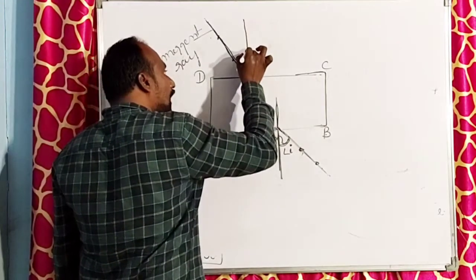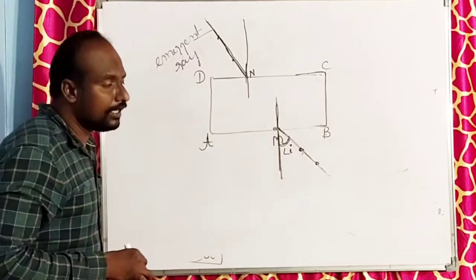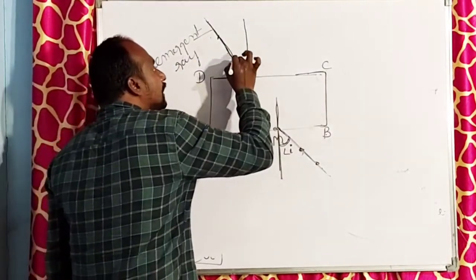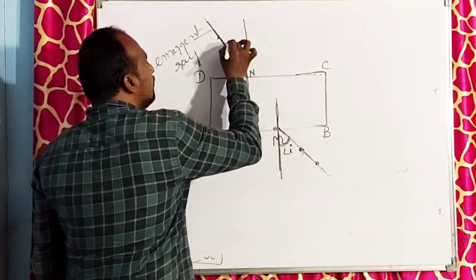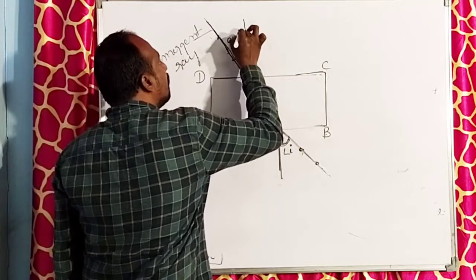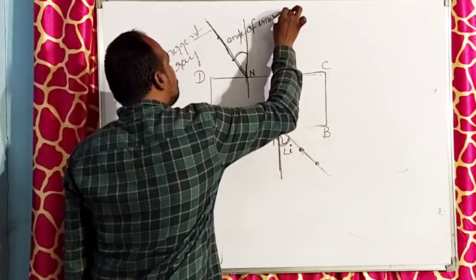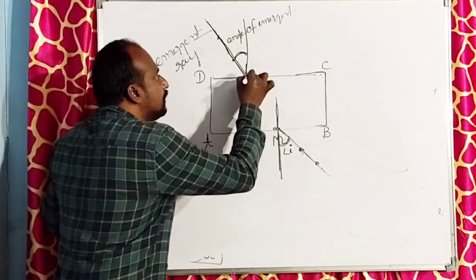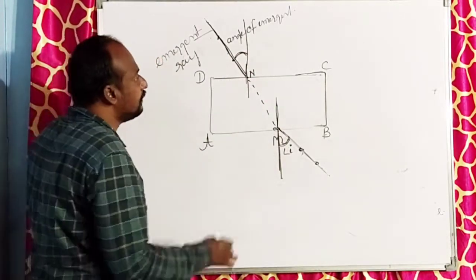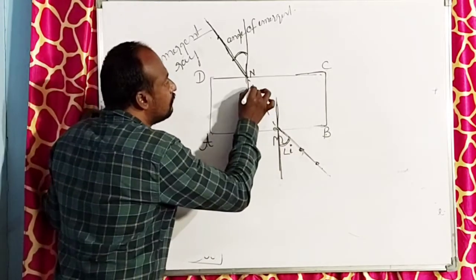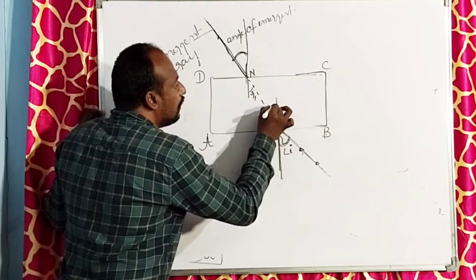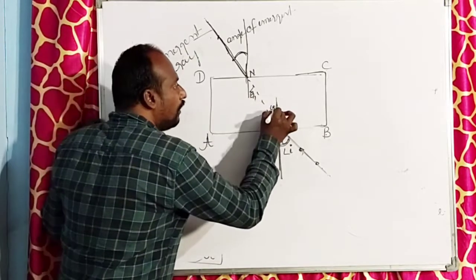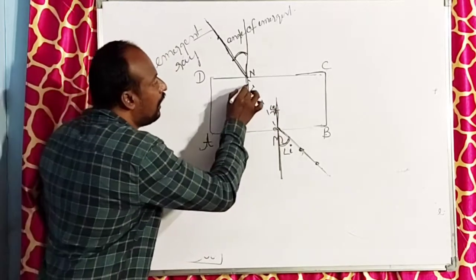Draw the normal at M point on the CD side. This is the emergent ray. Here also some angle will be formed — this angle is called the angle of emergent. Now join M and L to form the angles of refraction R1 and R2.